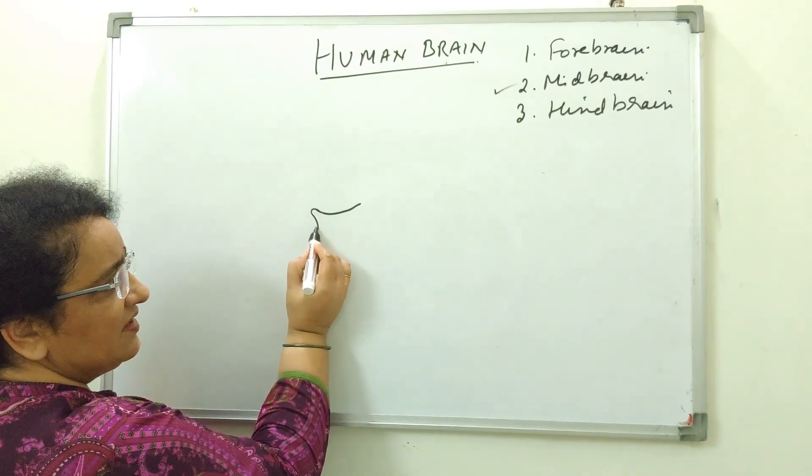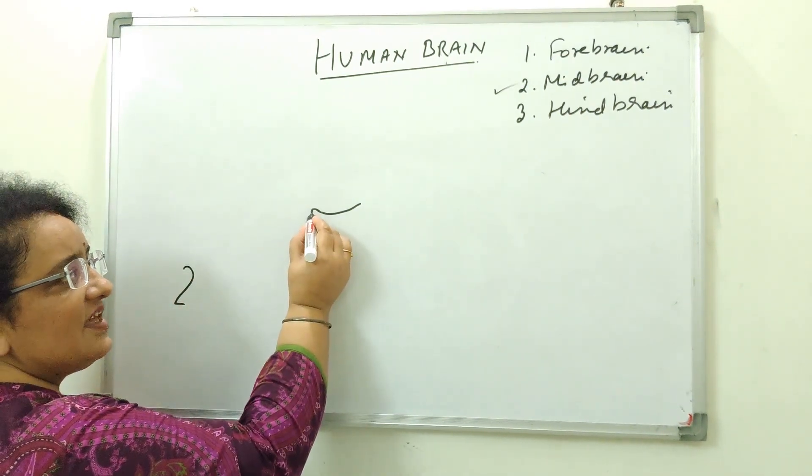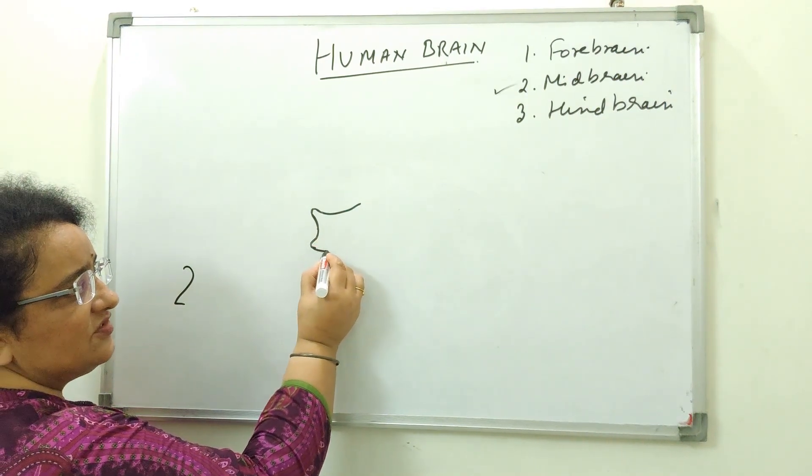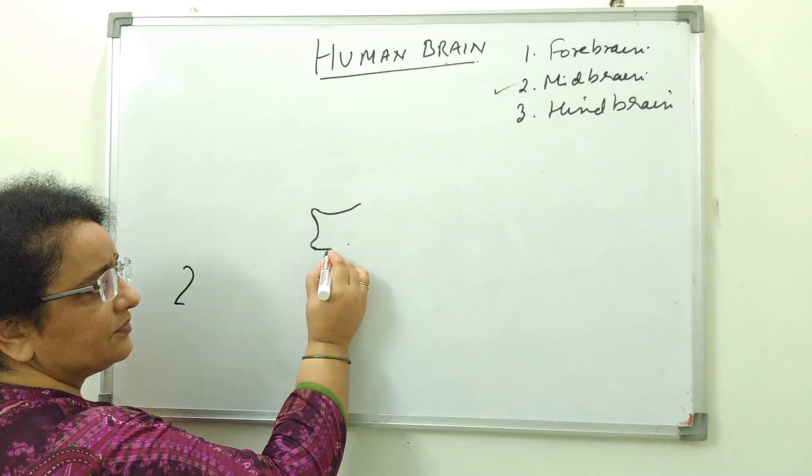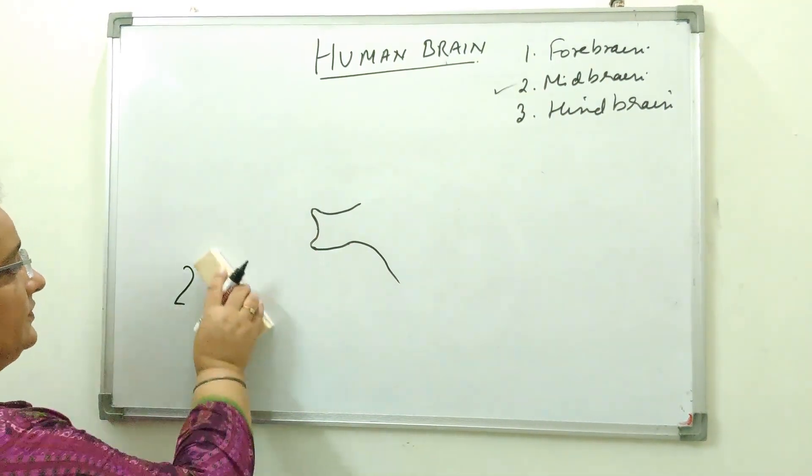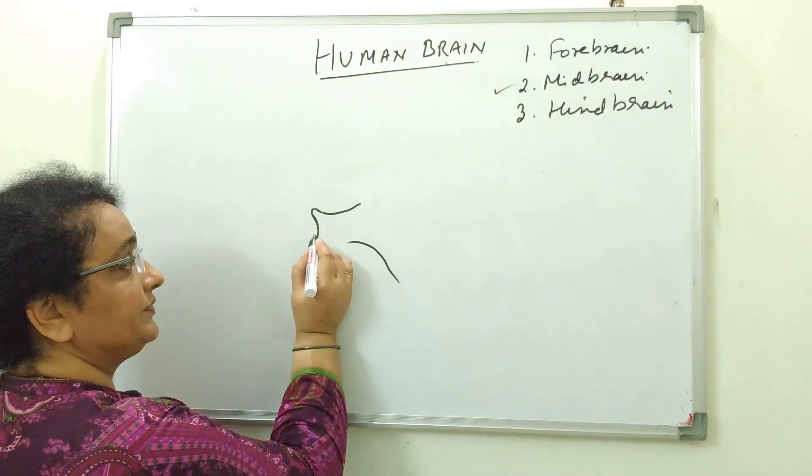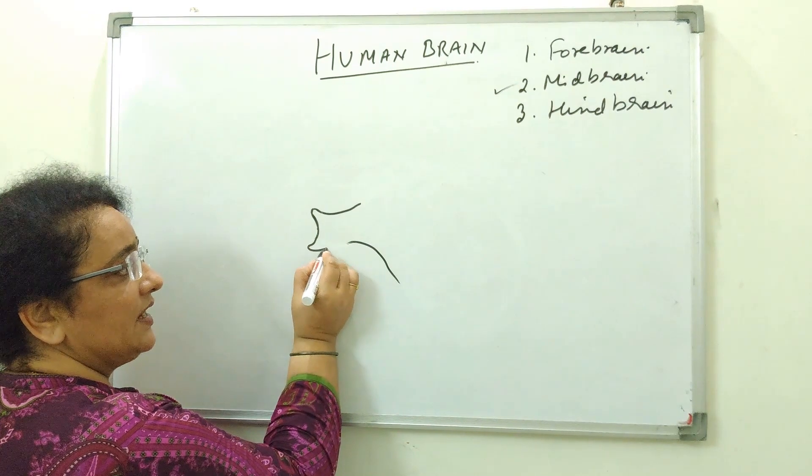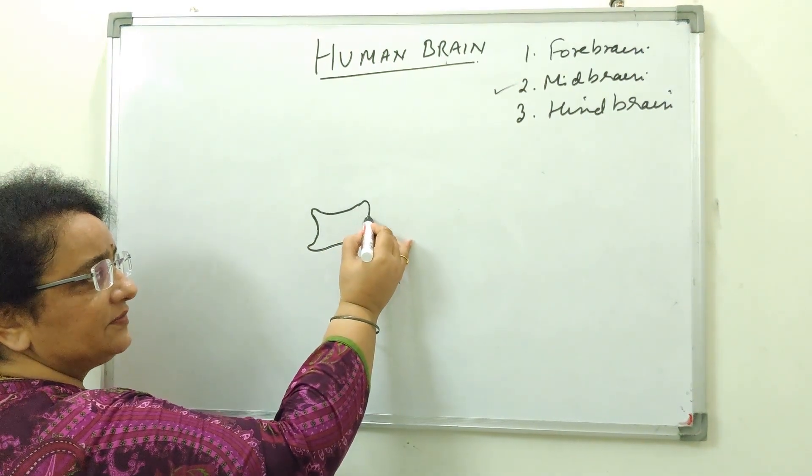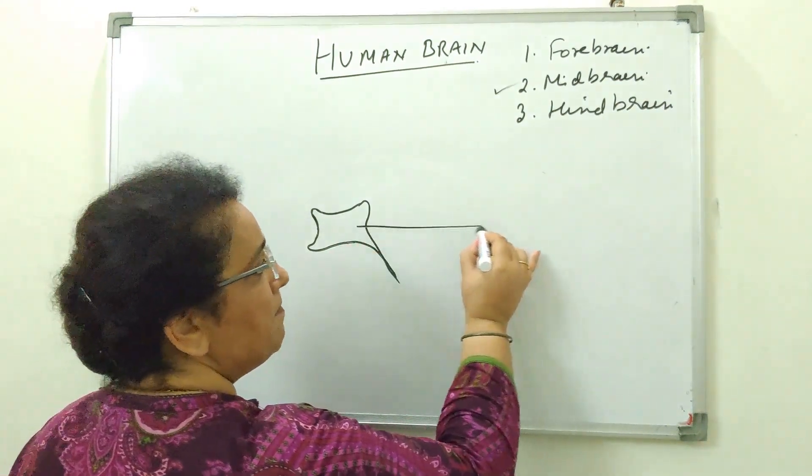The way we see, we write two like this and you have to give a slight curve over here and sink it here and throw it as a table. After that I will just like this and after that from here complete this chain. So this is the midbrain.